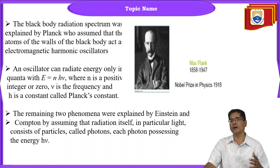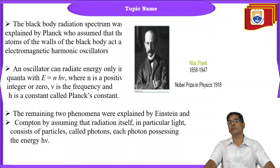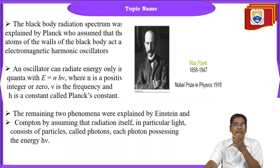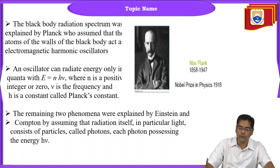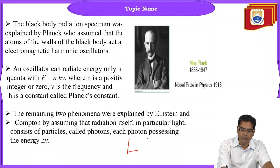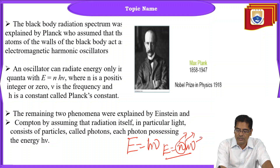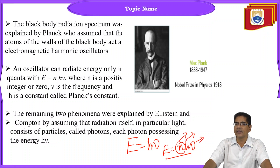The remaining two phenomena were explained by Einstein and Compton, by assuming that radiation itself — in particular light — consists of particles called photons. Each photon possesses energy E equals h nu. When this energy is quantized, we write E equals N h nu, where N is a positive integer, h is Planck's constant, and nu is the frequency of the radiation.